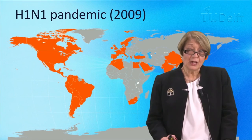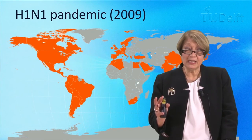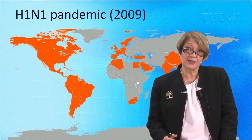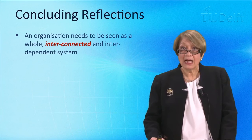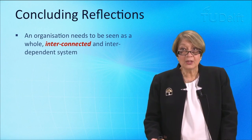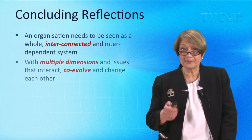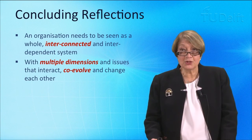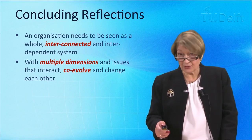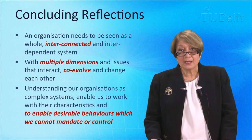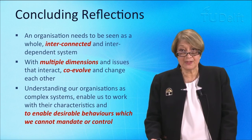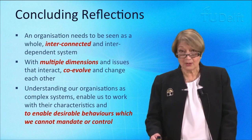This is part of the work we're doing with the World Economic Forum, and again, just to remind you that this has a practical application and is taken seriously at the highest global level. So some concluding reflections. An organisation needs to be seen as a whole, interconnected and interdependent system, with multiple dimensions and issues that interact, co-evolve and change each other. Understanding our organisations as complex systems enables us to work with their characteristics and to enable desirable behaviours which we cannot mandate or control.